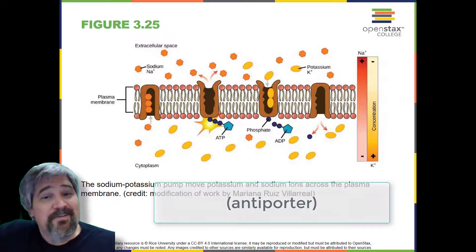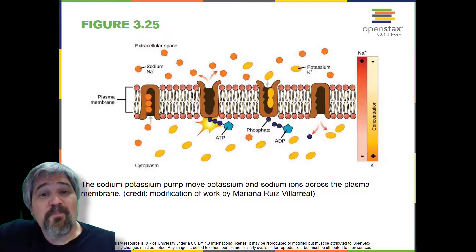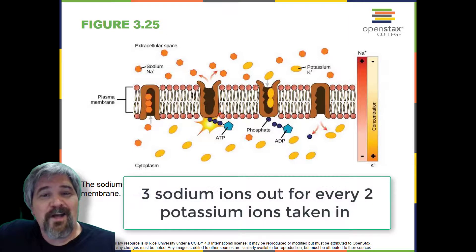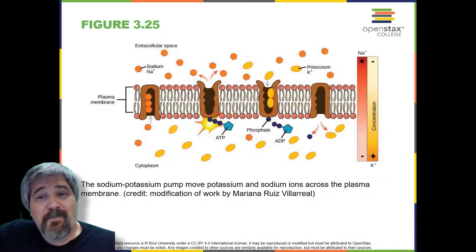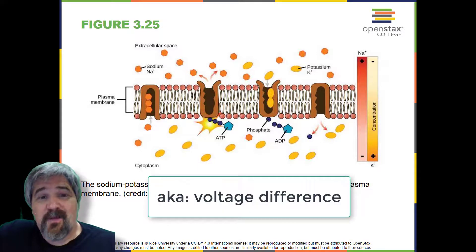The sodium-potassium pump, an important pump in animal cells, expends energy to move potassium ions into the cell and a different number of sodium ions out of the cell. The action of this pump results in a concentration and charge difference across the membrane.